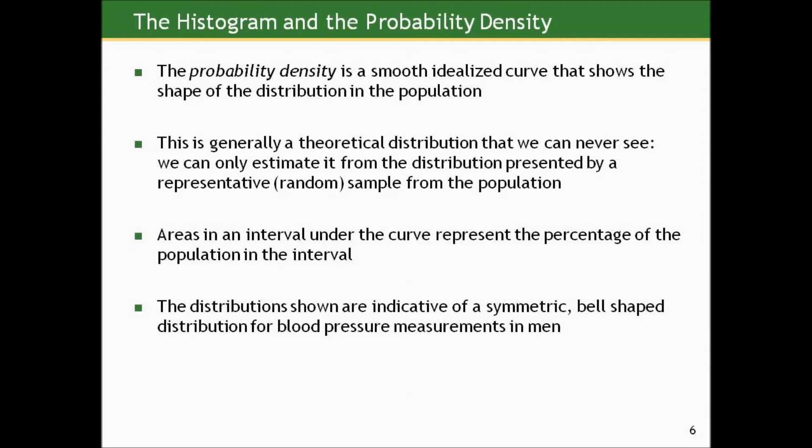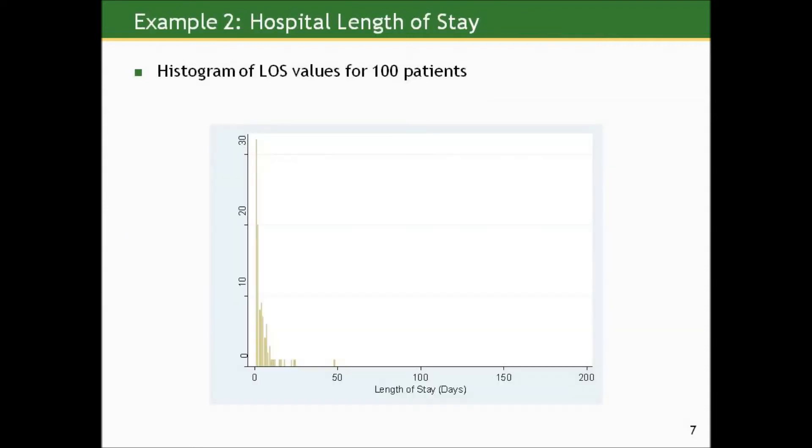So if I were a researcher and only had one sample — the sample of 113 men — and I did the histogram, that histogram of those 113 sample values would be my best estimate for the true population distribution in terms of the mean, median, SD, and shape.